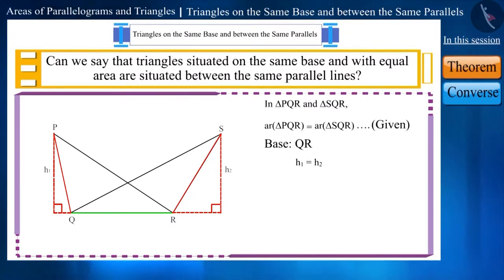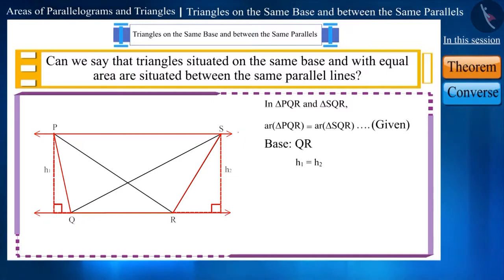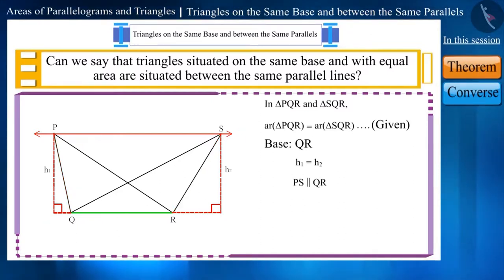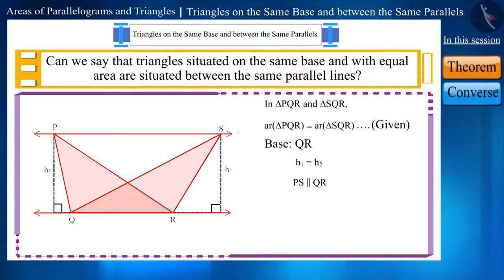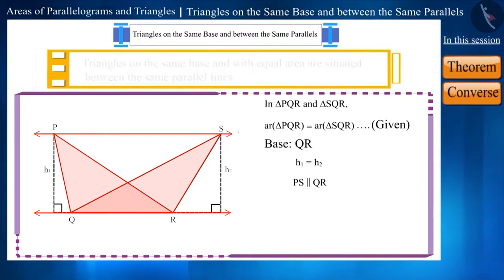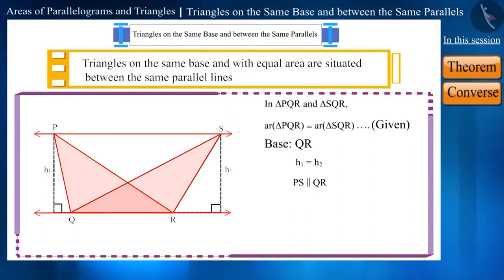If we join P and S by drawing a line, then we can say that PS and QR are parallel to each other. Therefore, we can say that triangle PQR and triangle SQR are situated between the same parallel lines. Thus, we have proved the inverse of the theorem, which says: triangles situated on the same base and between the same parallel lines are equal in area.